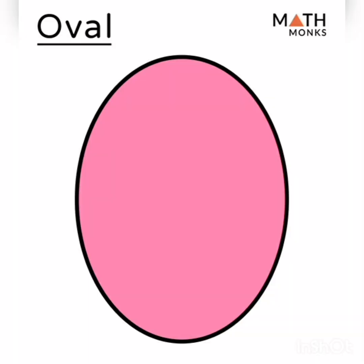Next shape: oval. Oval looks like an egg shape. Oval also has no sides and no corners. Example: balloons and egg.